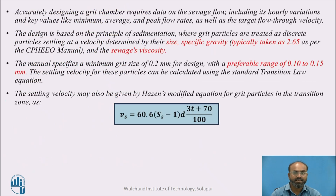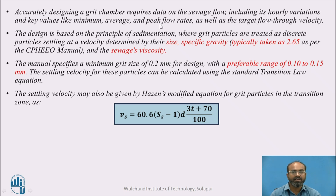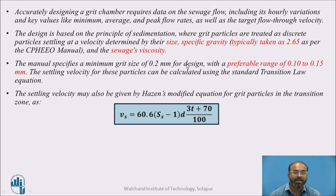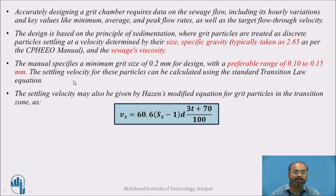When designing a grit chamber, I have to consider various factors like what the flow rate should be — whether minimum, average, or peak. Generally, peak flow rate is assumed for a grit chamber design. The design is treated as type one sedimentation where discrete particles settle, requiring consideration of grit particle size, specific gravity, and sewage viscosity. As per the manual, the minimum grit size is generally taken to be 0.2 mm, with a preferable range of 0.1 to 0.15 mm, and the settling velocity for these particles can be calculated using the standard transition law equation.